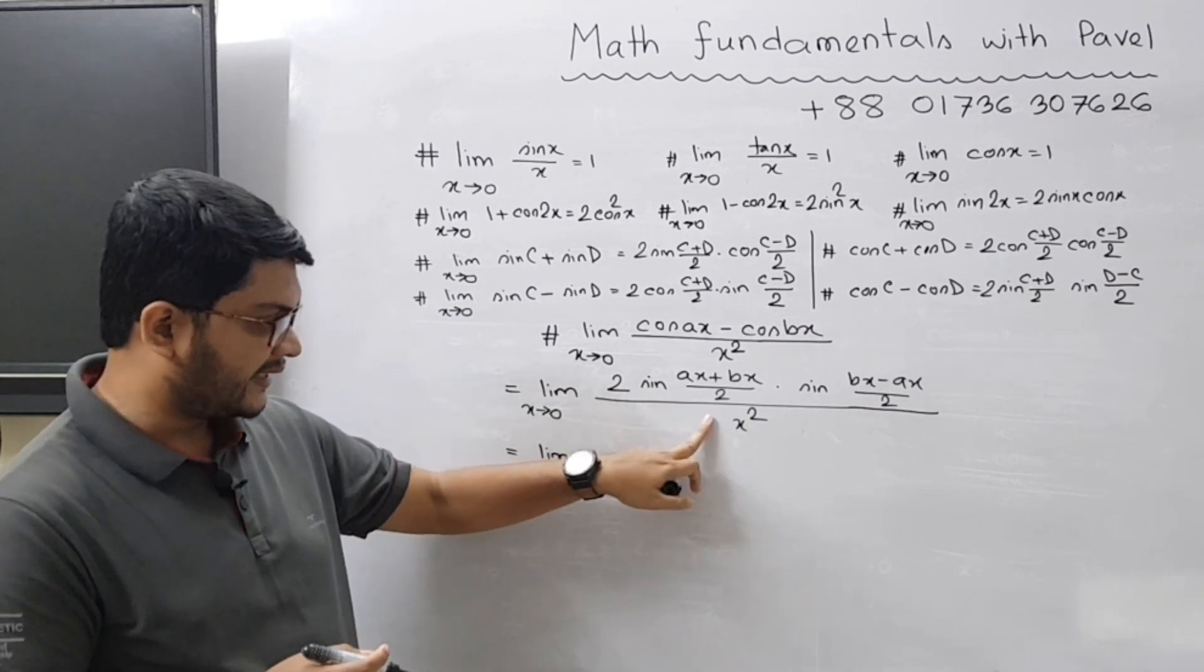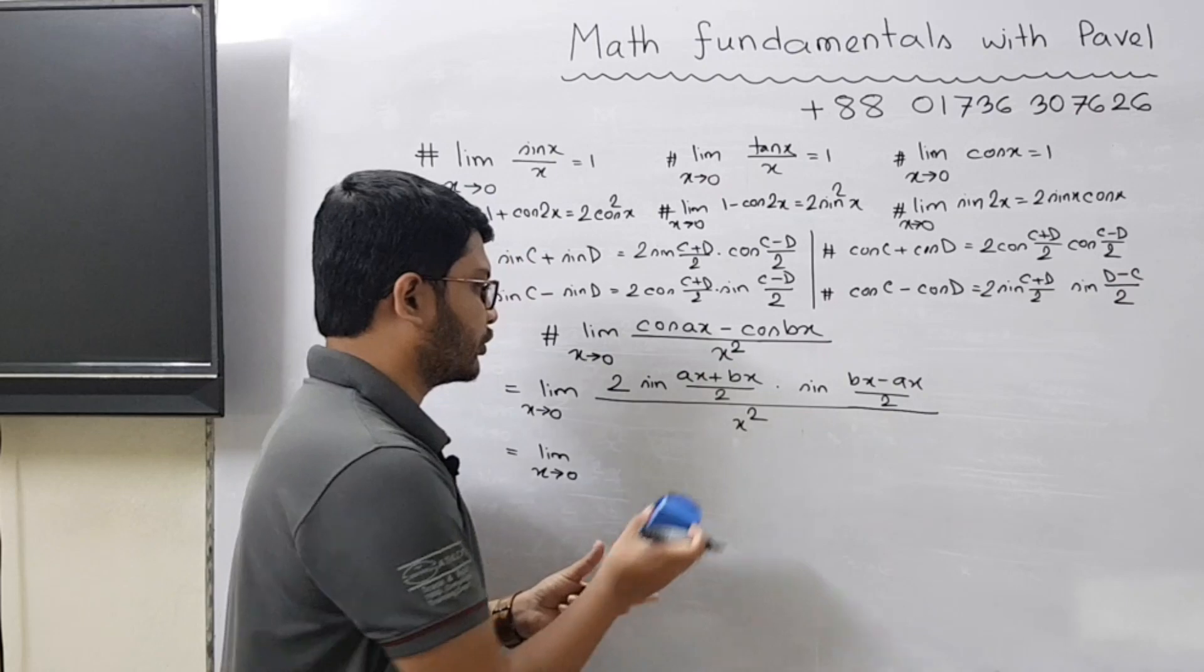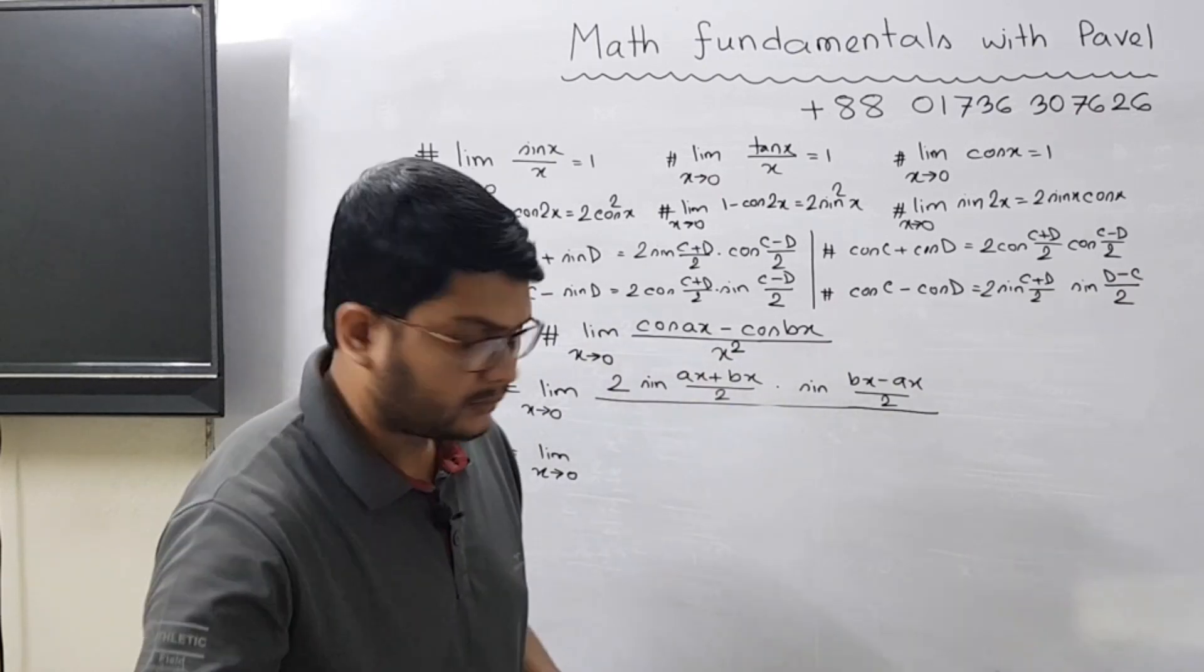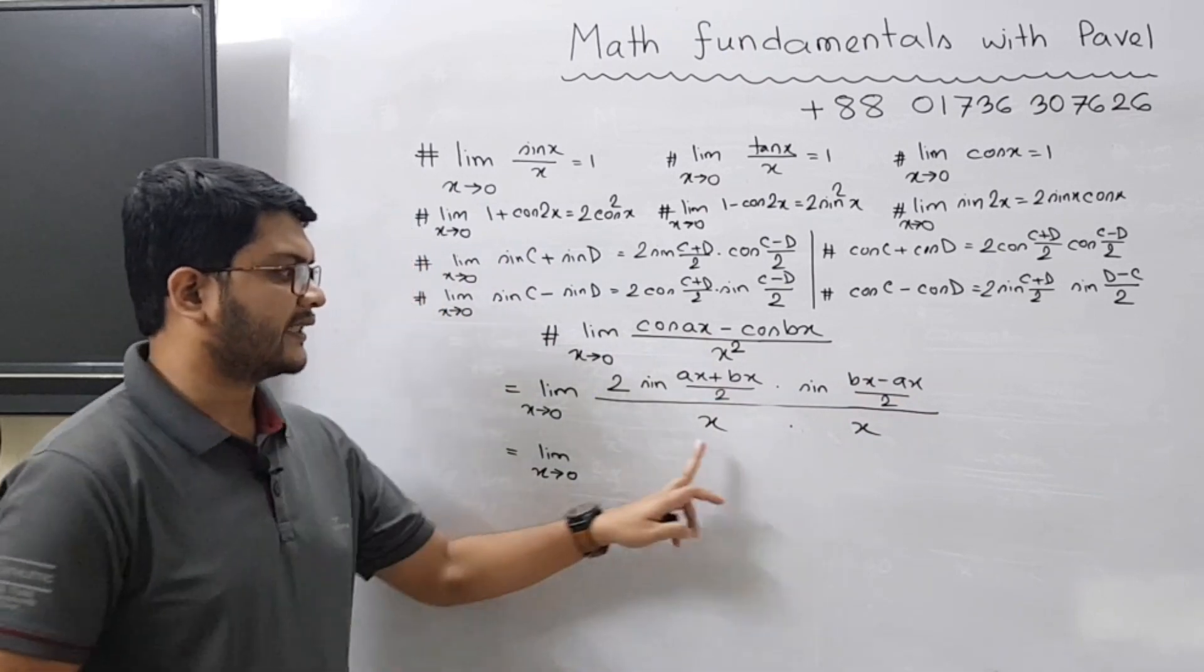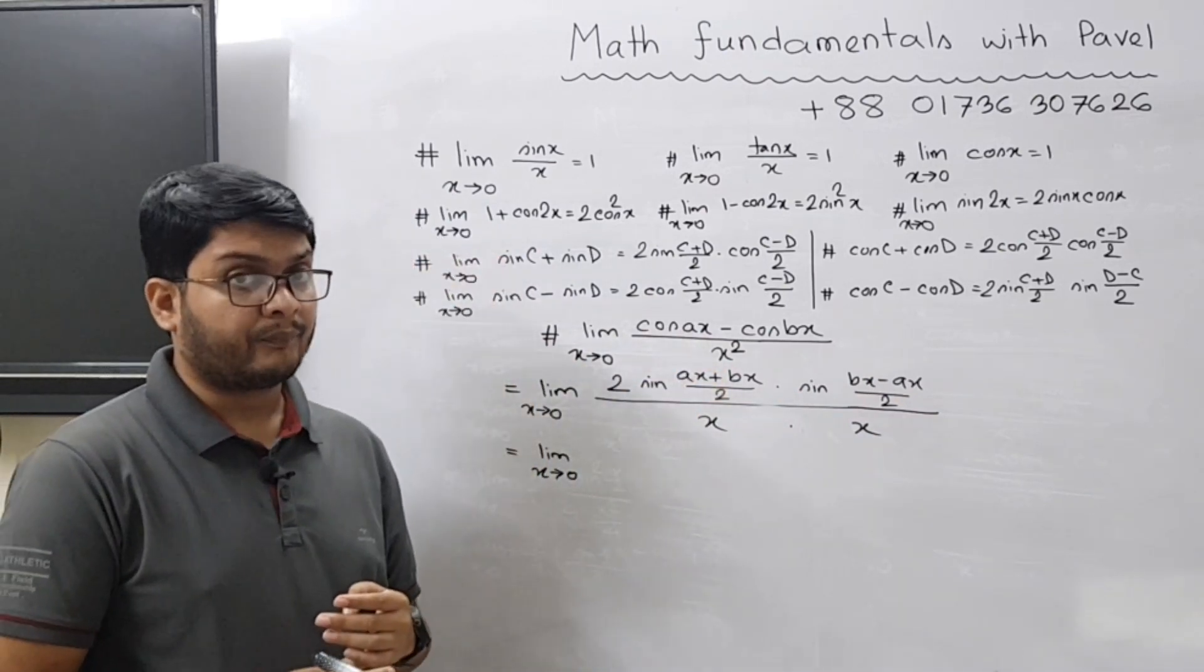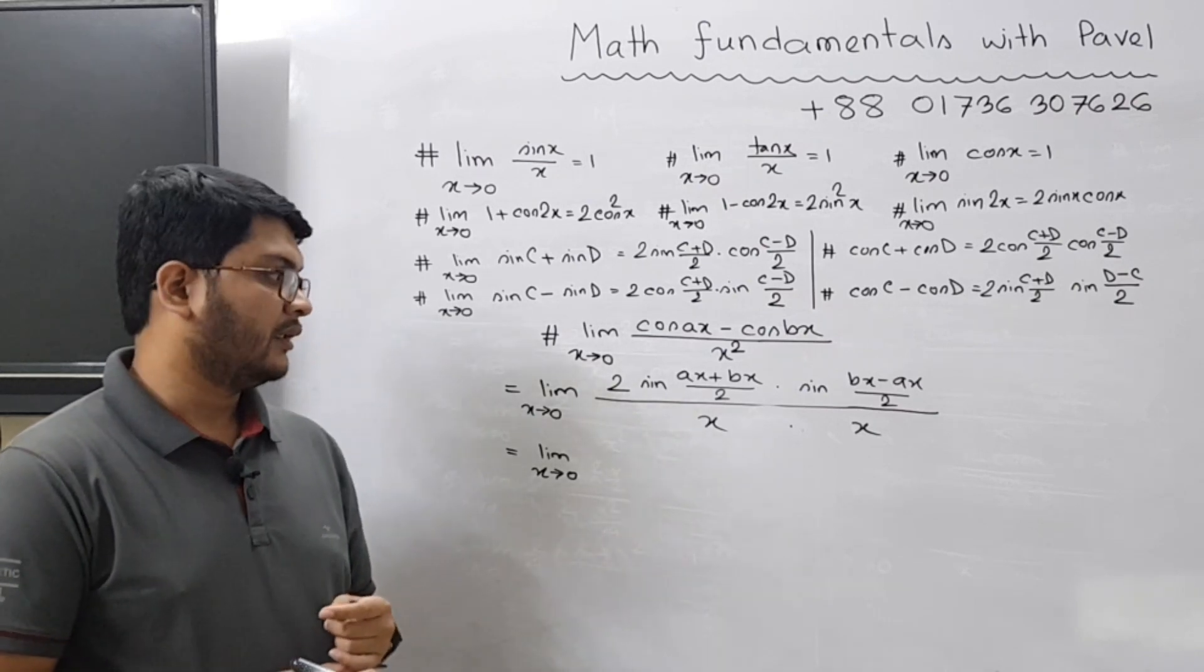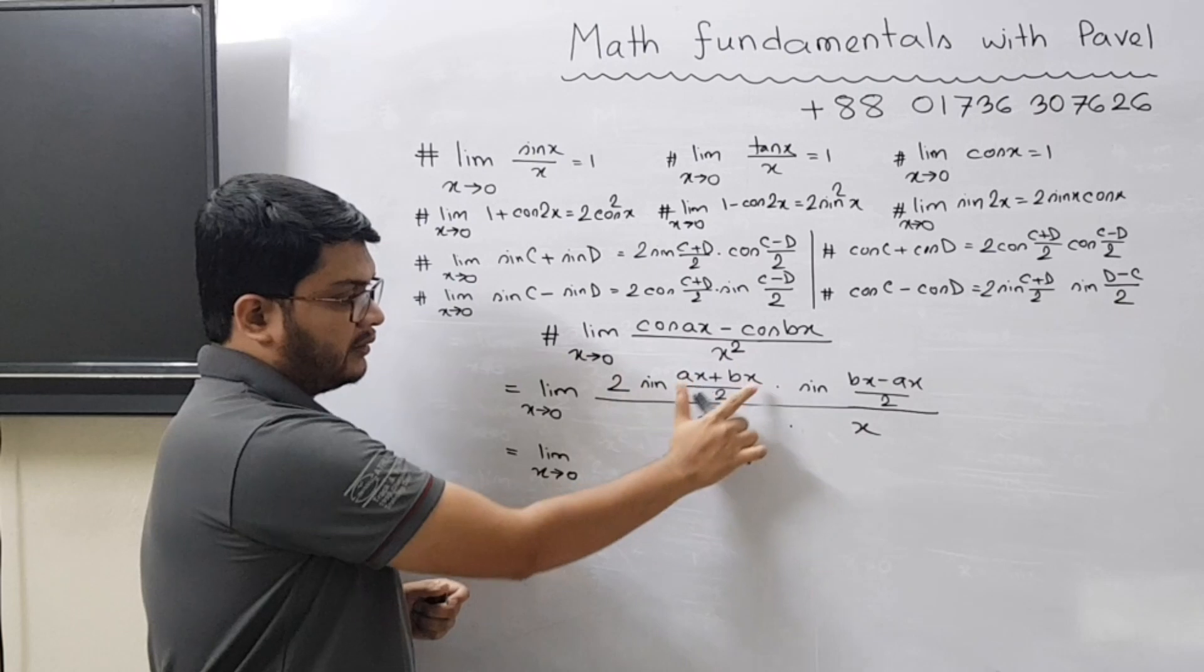You write one x here and one x here. x times x becomes x square. Now the most important part is to adjust the theta. Sine this theta is equal to ax plus bx divided by two, but you have only x here. And you have bx minus ax by two, but you have only x here.